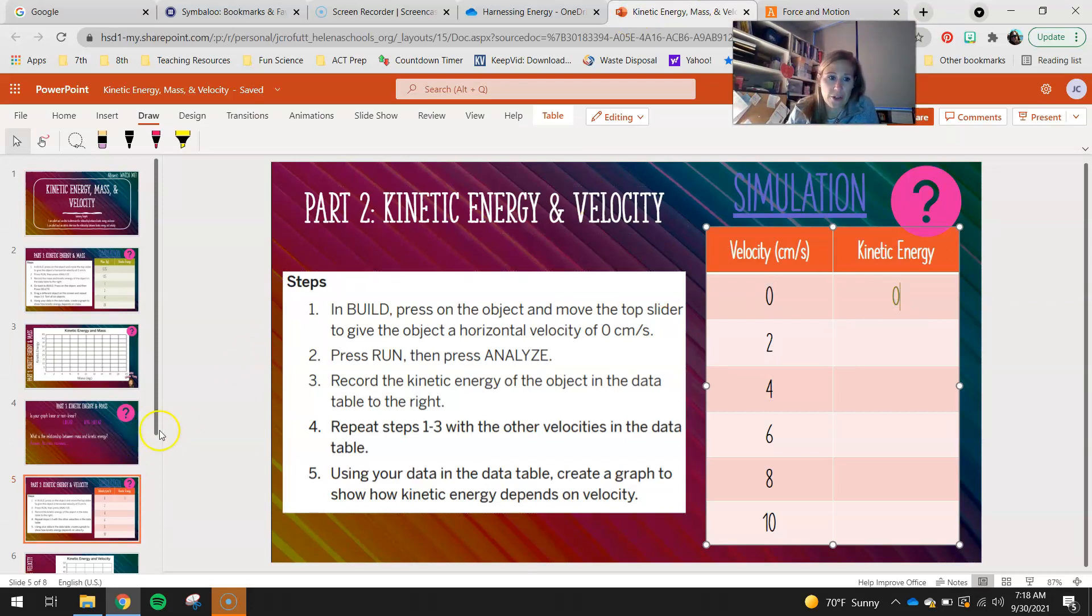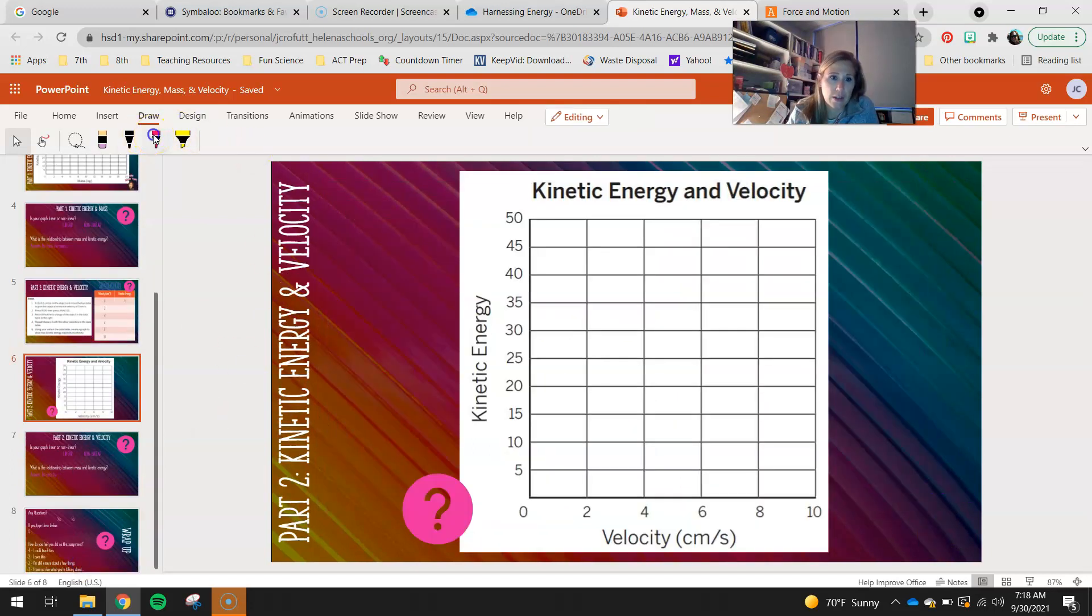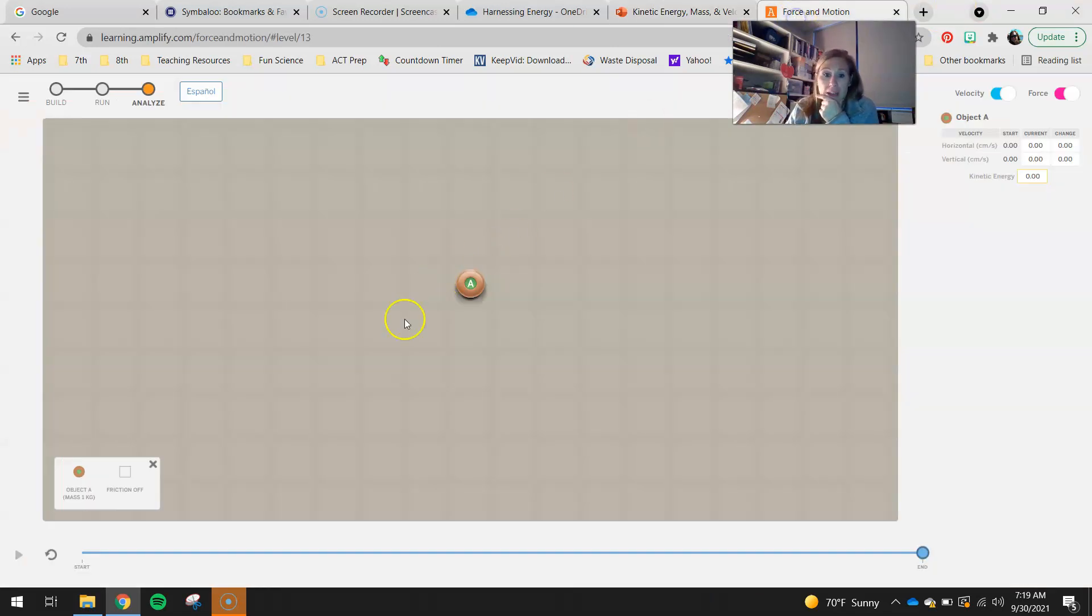Then I'm going to go ahead and hit analyze and say, alright, my kinetic energy is a big fat zero. So I would also plug zero into this chart. And that would be my first number I graph on the next slide as well, zero, zero, which would be right down here. Zero, zero. Right there is my first data point. And then record the kinetic energy of the object in the data table. Repeat steps one through three with the other velocities in the data table. So you're not going to be changing the mass of your puck at all. Again, we want to isolate velocity and just change the velocity of our one kilogram puck.